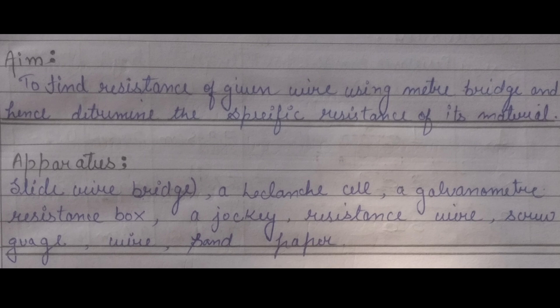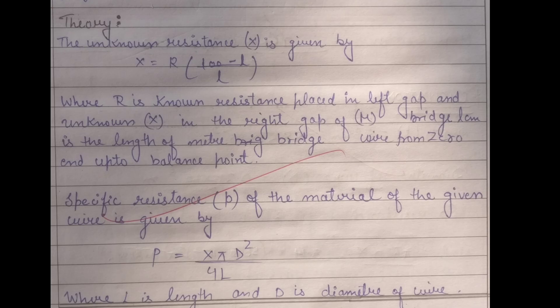The aim of this practical is to find the resistance of a wire using a meter bridge and hence determine the specific resistance of its material. We require the following apparatus: a slide wire bridge, a Helan shell, a galvanometer, resistance box, jockey, resistance wire, screw gauge, wire, and sandpaper.